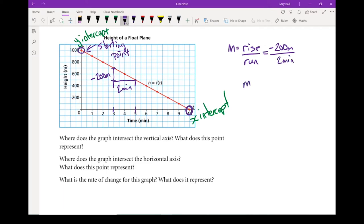So my rate of change, if I do negative 200 divided by two, we're looking at a negative 100 meters per minute. That means that the airplane is dropping at 100 meters a minute.